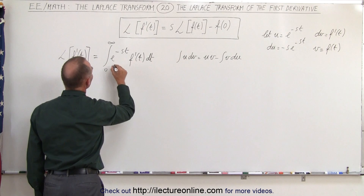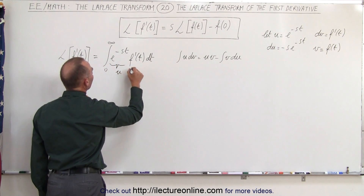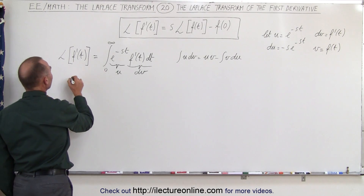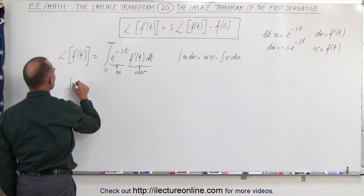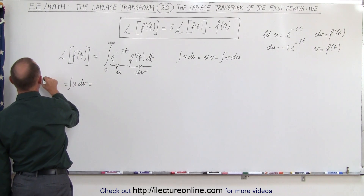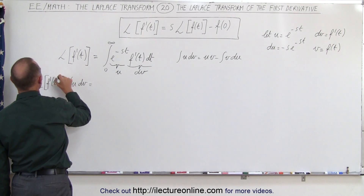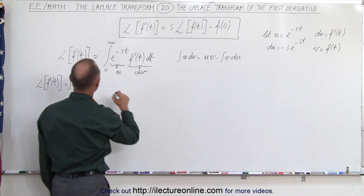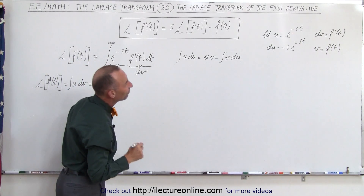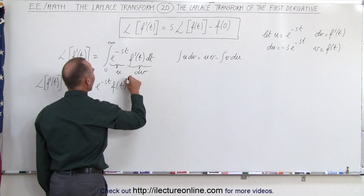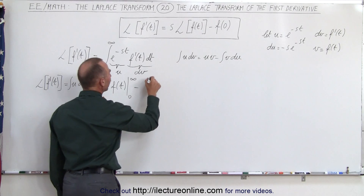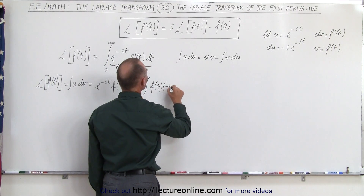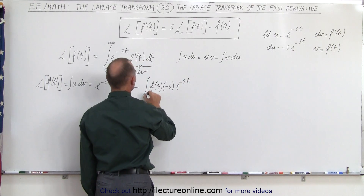If we plug that in, notice that e to the minus st is equal to u, and f prime of t dt is equal to dv. The Laplace transform of f prime of t can then be written as u times v, which is e to the minus st times f of t, evaluated from zero to infinity, minus the integral of v du, which is f of t times minus s times e to the minus st, from zero to infinity.